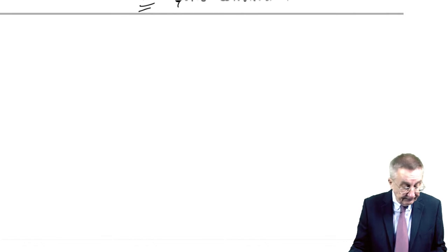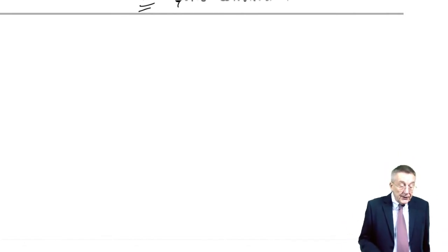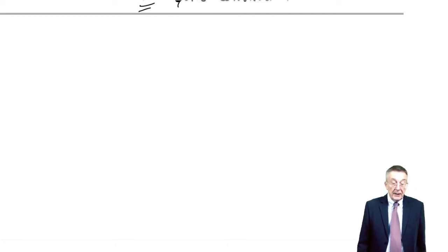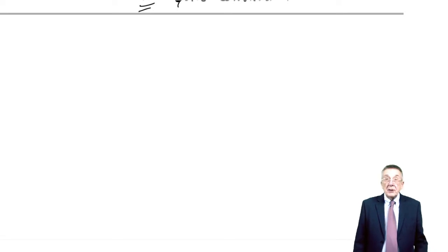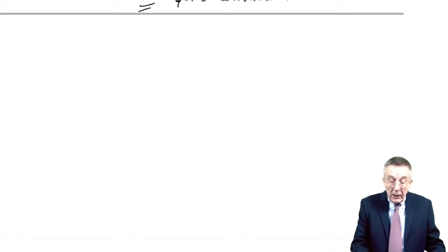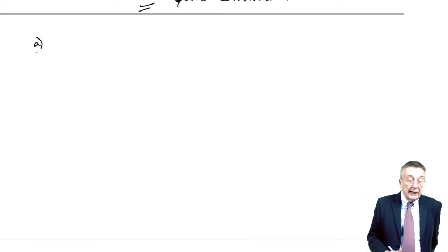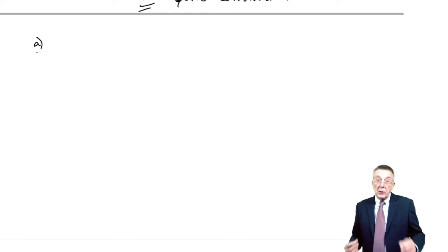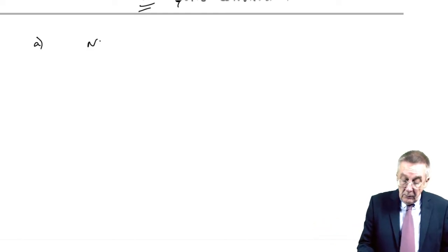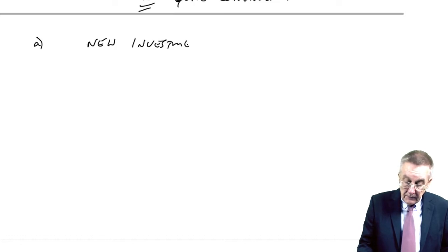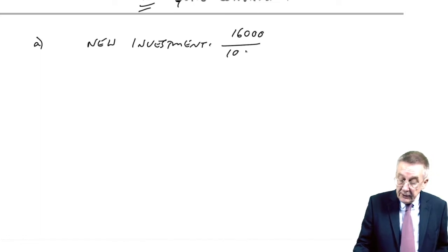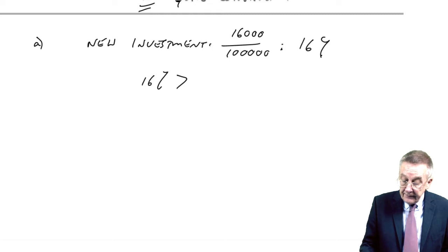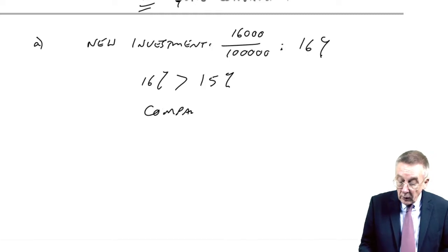But look at example two. It's exactly the same, except this time the investment costs £100,000 and gives additional profit of £16,000. Is the new investment attractive for the company as a whole? Calculate the ROI with and without. As far as the company is concerned, the company's got an overall target of 15%. If the new machine gives more than 15%, the company wants it. The new investment gives £16,000 a year on investment of £100,000, so it's giving a return of 16%. The company's target is 15%, and therefore it's worthwhile — the company wants to accept.